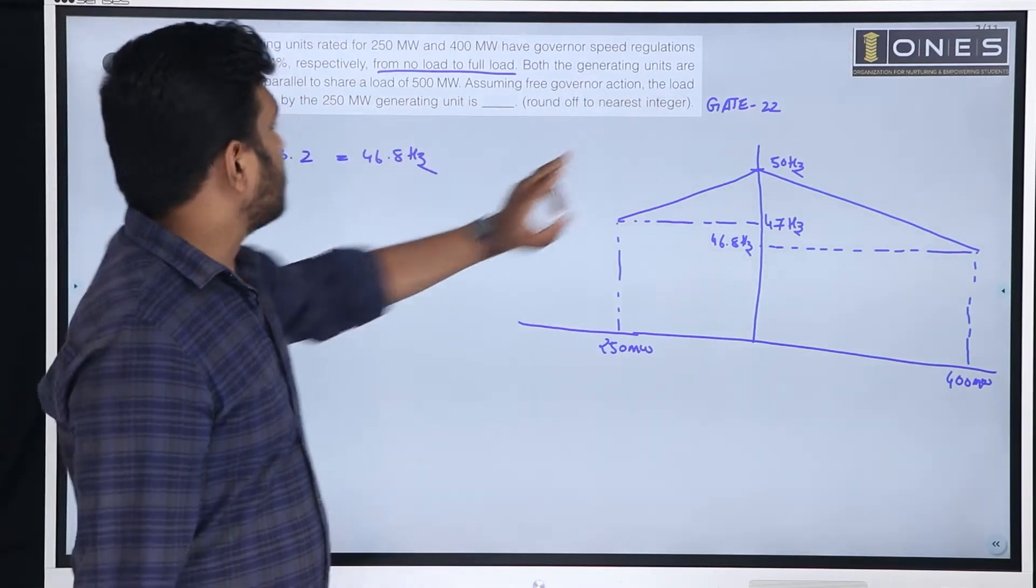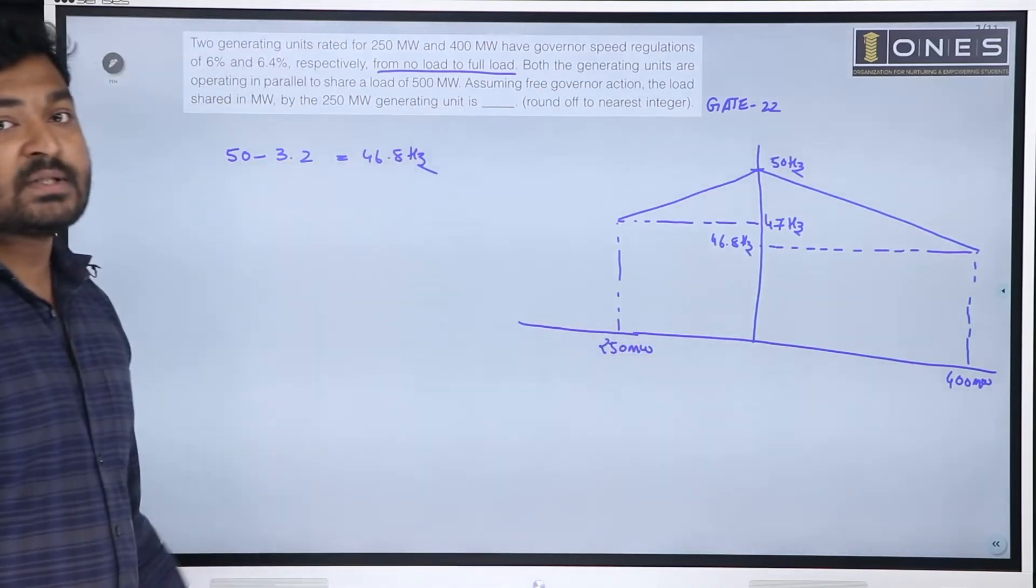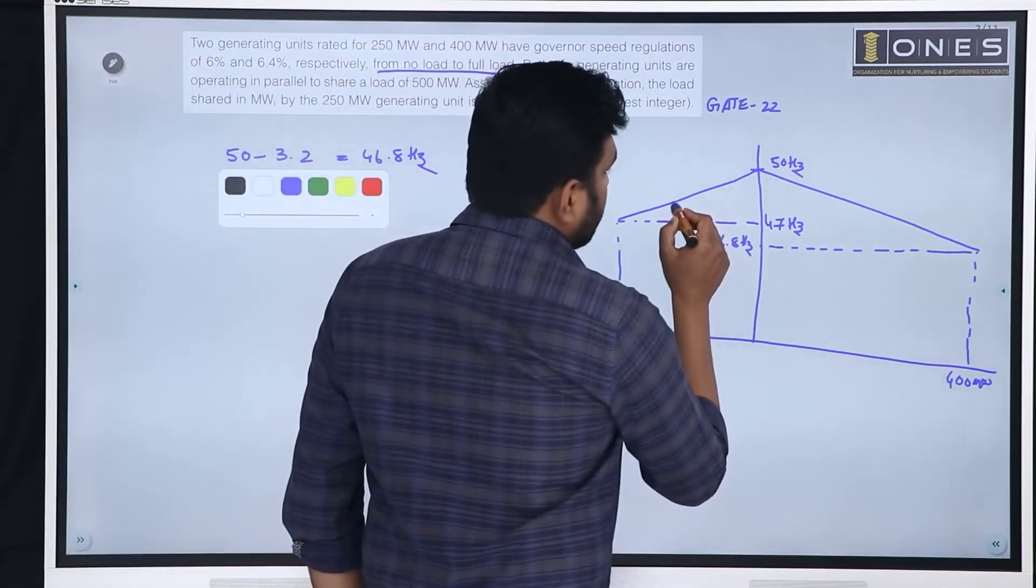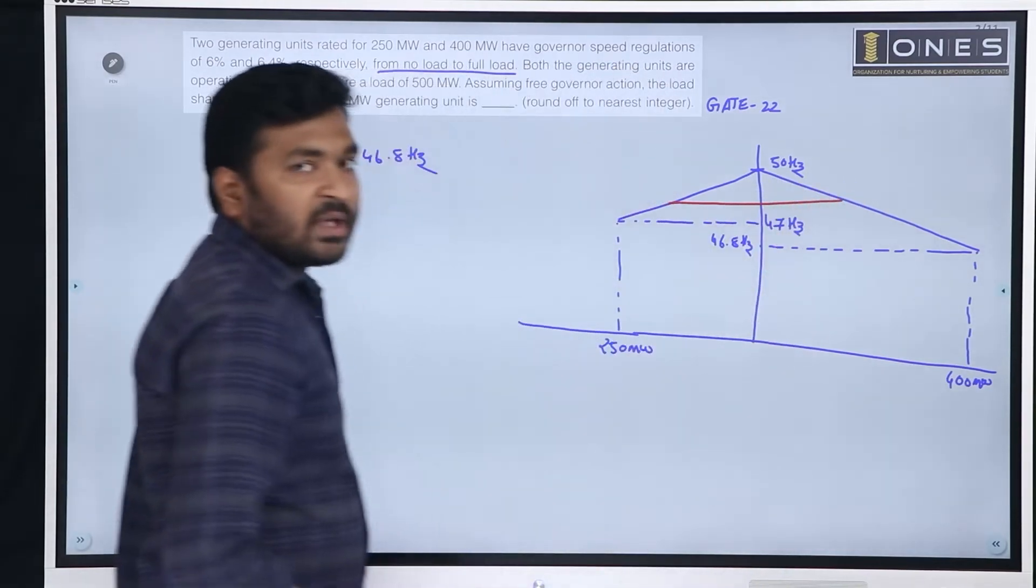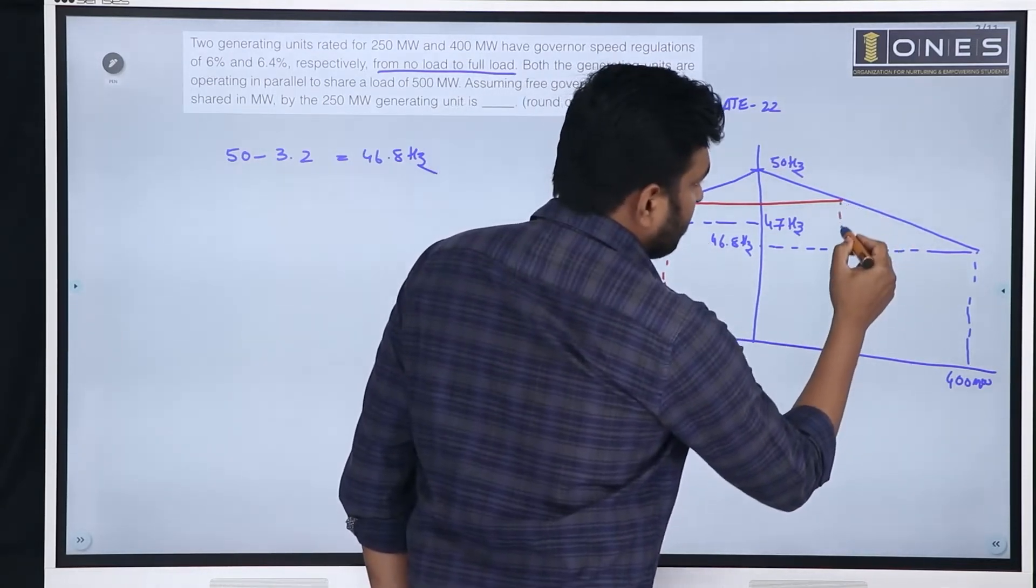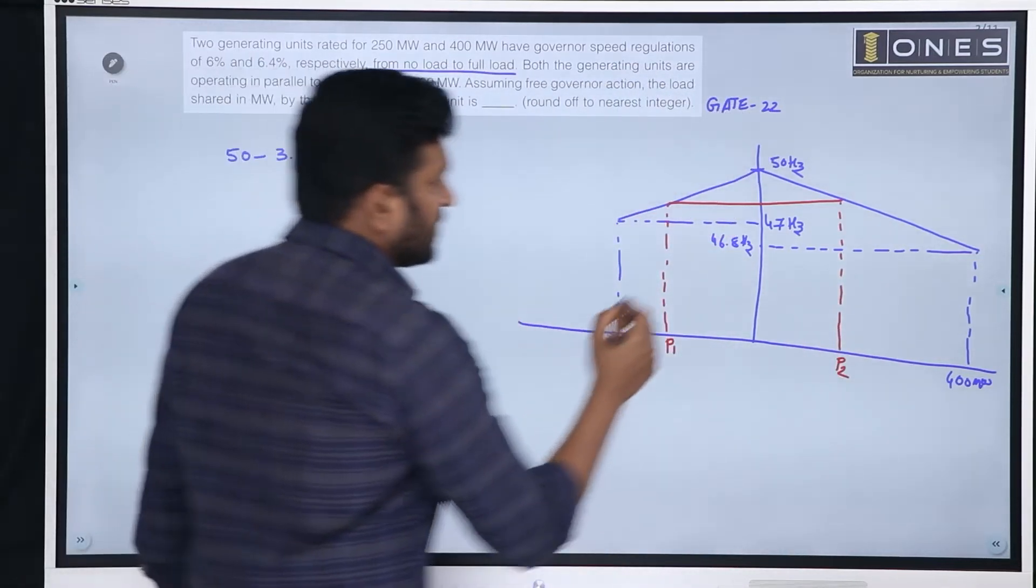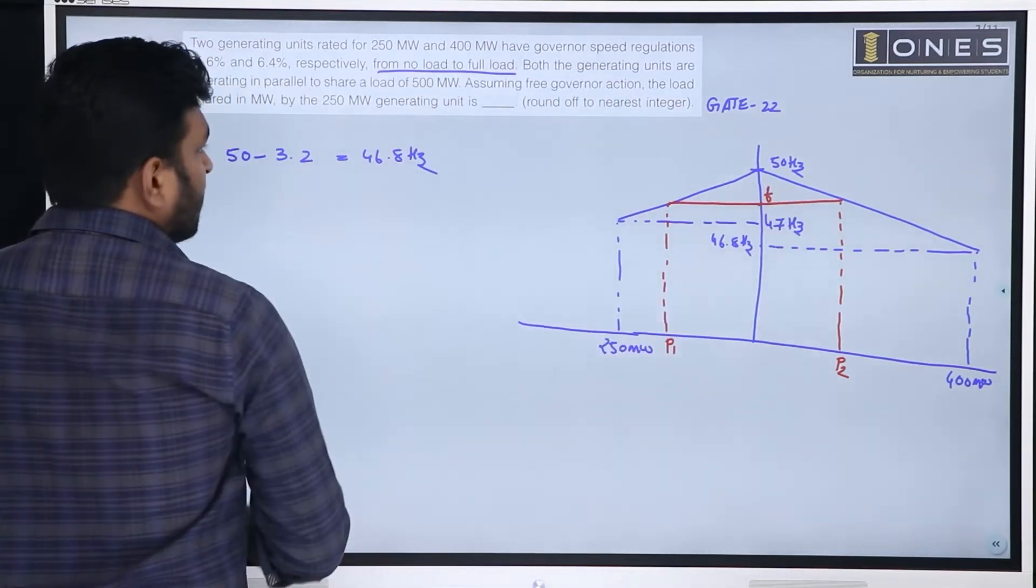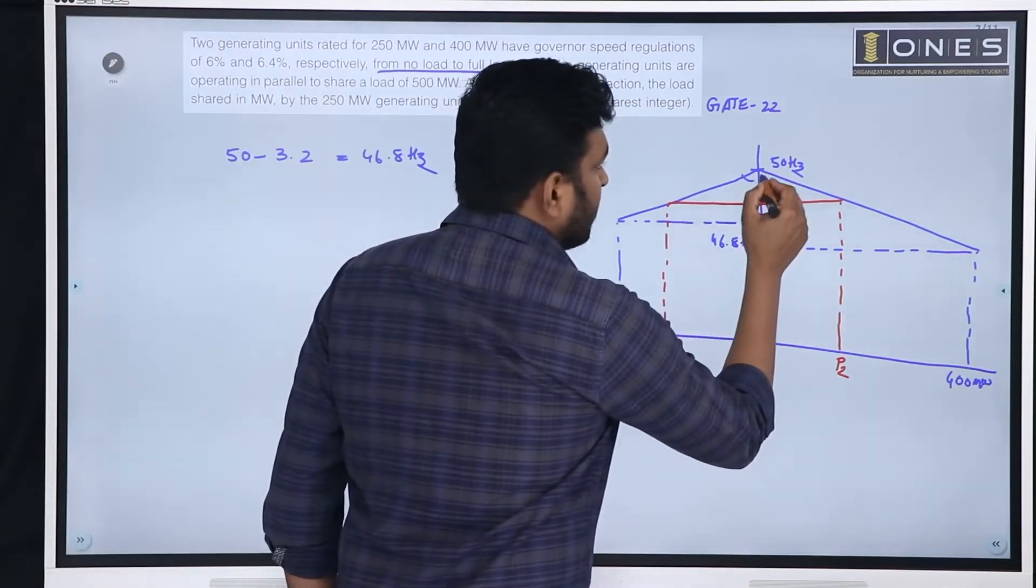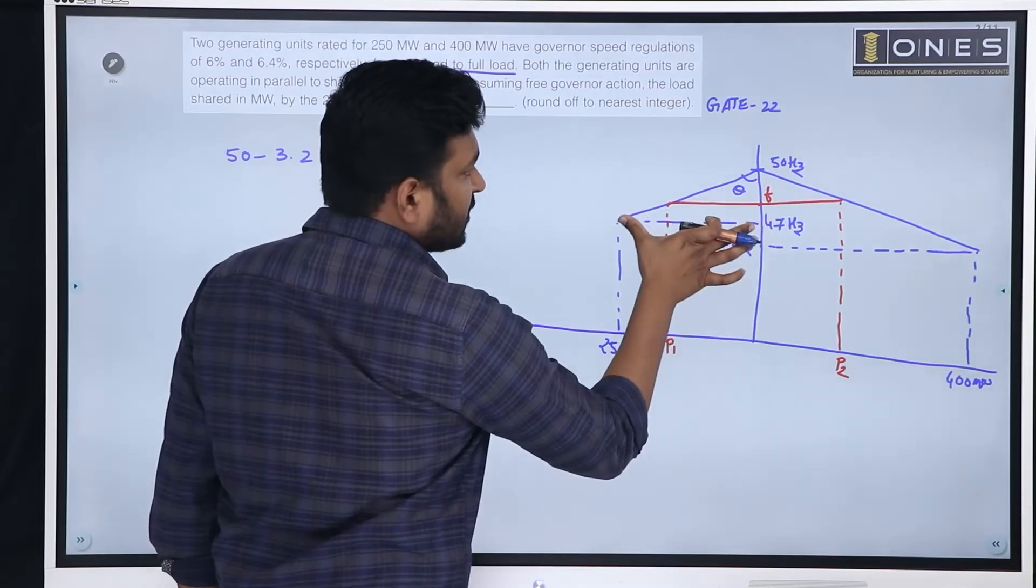Assuming free governor action, the load share in megawatt by the 250 megawatt generating unit. So, let us see, this is a common frequency. Assume 250 megawatt share load P1, 400 megawatt share load P2. Here the frequency F. We will take triangle. Angle theta, tan theta is opposite by adjacent.